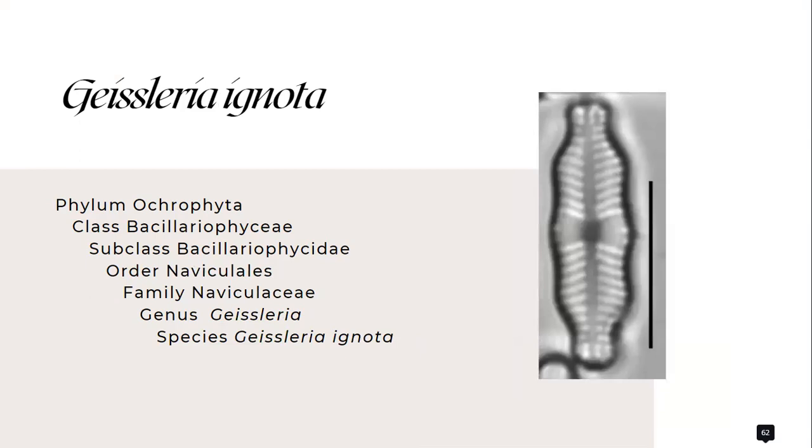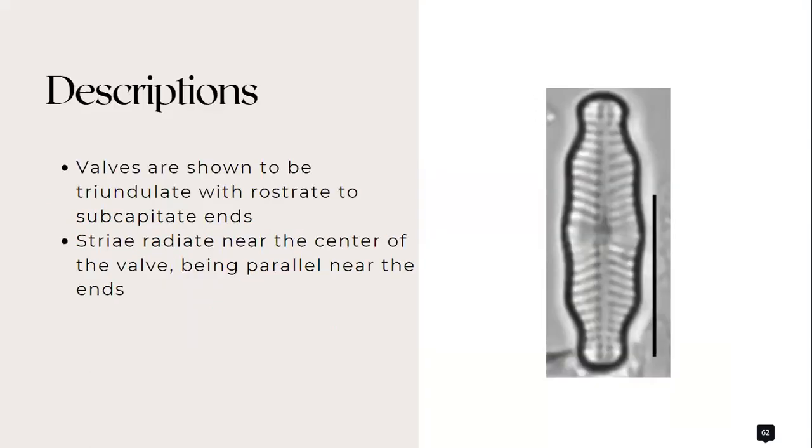Geissleria ignota from the family Naviculaceae. Its valves are shown to be triangulate with rostrate to subcapitate ends, and its striae radiate near the center of the valve, being parallel near the ends.